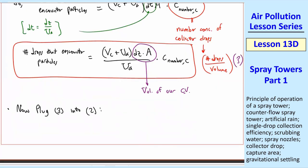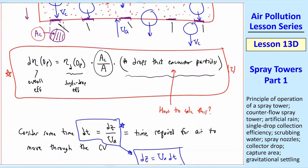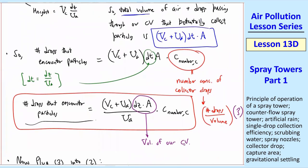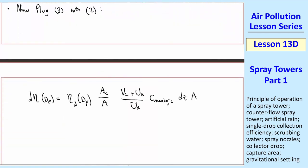Now let's plug equation 3 into equation 2. I'll scroll up and remind you what equation 2 is. It was this expression for d eta in terms of this quantity that we didn't know, number of drops that encounter particles. Well, that's what we now have in equation 3. So when we plug 3 into 2, we get d eta is eta D times AC over A, and then this expression we had here in equation 3.